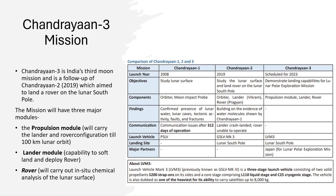Chandrayaan-3 mission successfully landed a rover on the lunar south pole. It had three major modules: a propulsion module to carry the lander and rover to a 300 km lunar orbit; a lander module with the capability to soft-land and deploy the rover; and the rover itself, which carried out in-situ chemical analysis of the lunar surface. The mission was launched on LVM3 (Launch Vehicle Mark 3).